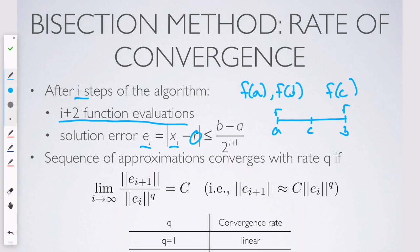And then your error in either case would be half the width of the interval. Half the width of the interval is just b minus a over two to the zero plus one, b minus a over two.